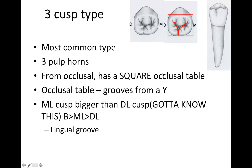Sometimes they ask about which cusp is bigger. The mesiolingual cusp is bigger than the distolingual cusp. The three-cusp type has a lingual groove which completes that Y shape.